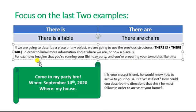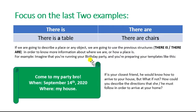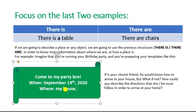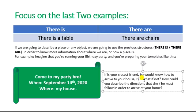For example, imagine that you are planning your birthday party and you are preparing your invitations like this: 'Come on to my party, bro — September the 14th, 2020, at my house.' Do you think that with only this information your friend is going to arrive at your house? If it's your closest friend, obviously he would know how to get there. But what if not? How could you describe the directions he or she must follow in order to arrive at your home?